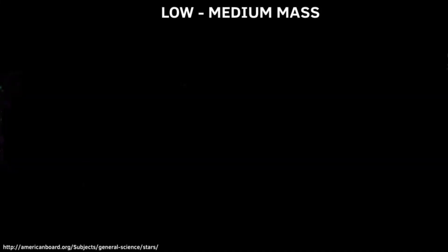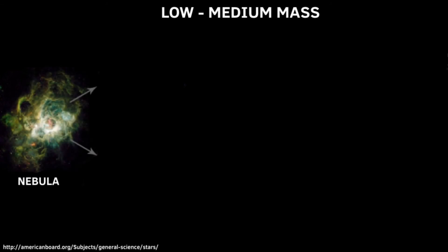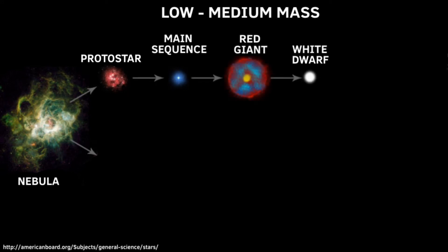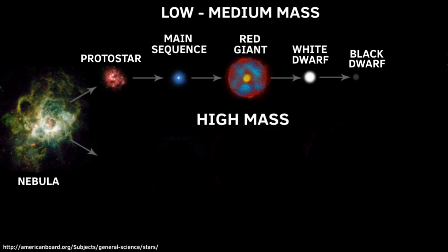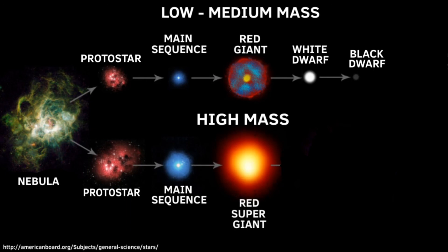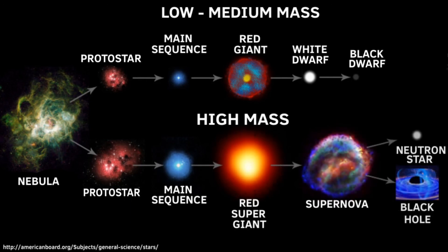Quick summary: an average star's life cycle starts with a nebula, then moves on to a protostar, then a main sequence star, followed by a red giant, then a white dwarf, and finishes with a black dwarf. A massive star's life cycle also starts with a nebula, then a protostar, then a main sequence star, followed by a red supergiant, then a supernova, and finishes with either a neutron star or a black hole.